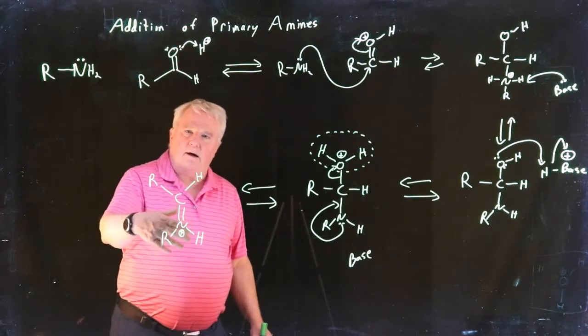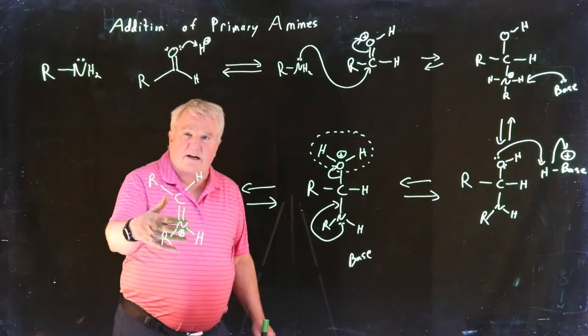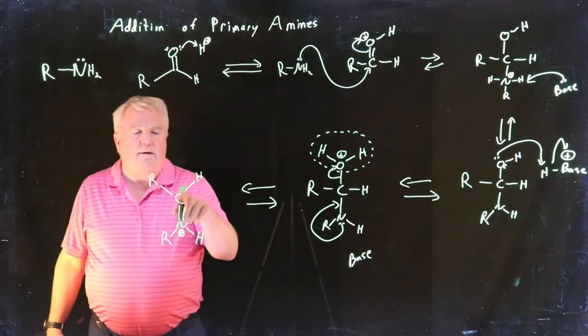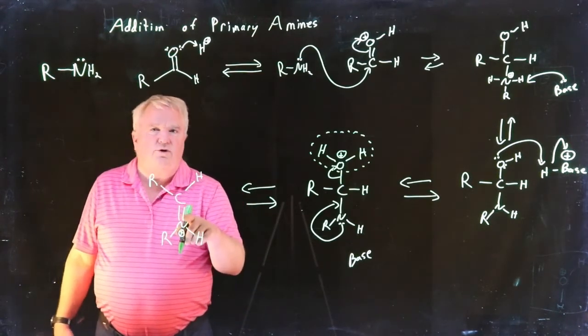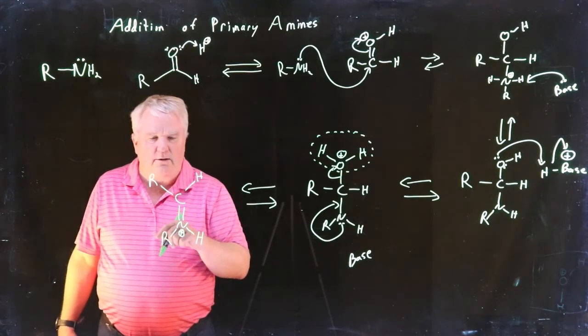We have our protonated compound. It has carbon nitrogen double bond. And we can draw a resonance structure just like we could with the protonated carbonyl. So this is very much like a protonated carbonyl. And now, all we have to do is use our base with this lone pair of electrons.